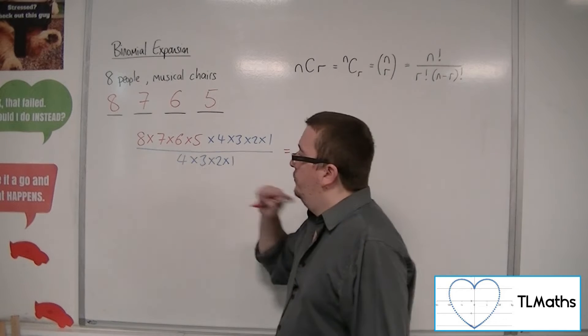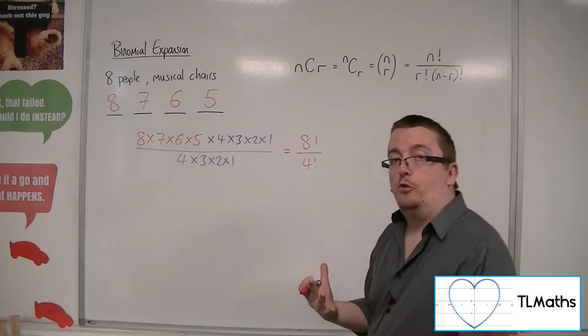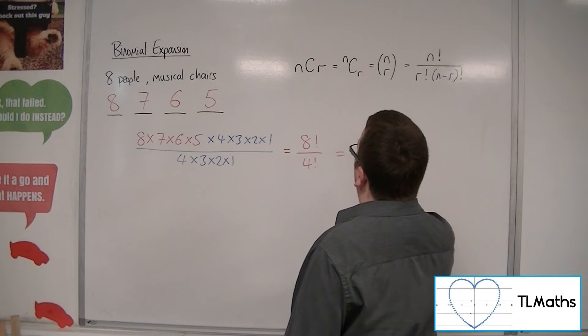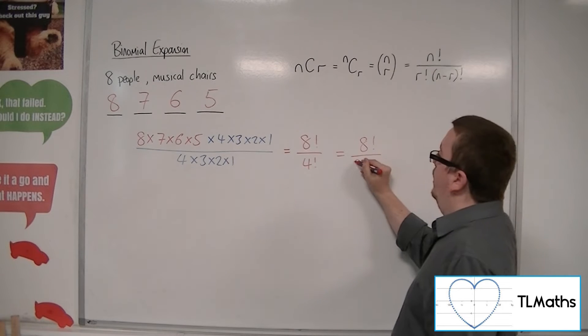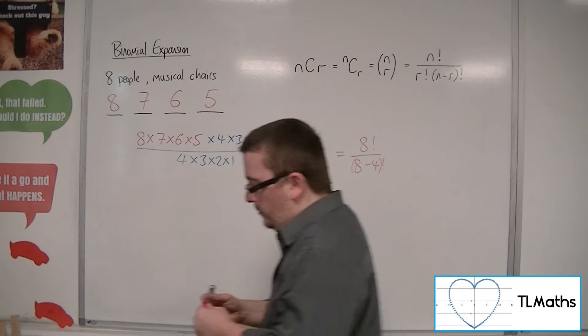Now, four is coming from the fact that it's eight people and there are four chairs, so eight take away four. So you could represent this as 8! over (8-4)!.